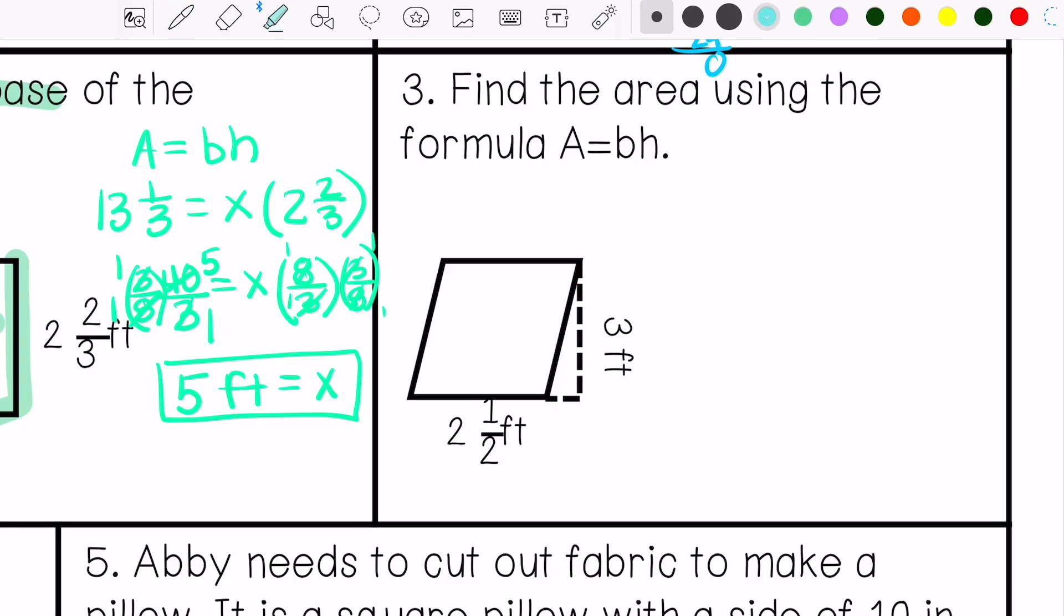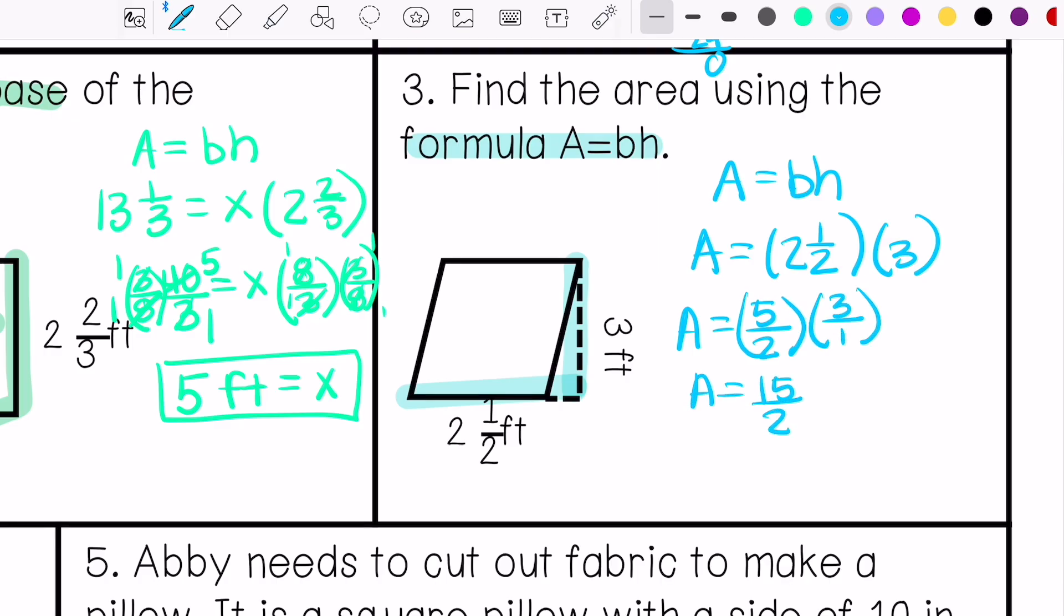Alright, this says find the area using the area formula. Area equals base times height. Don't know my area. My base is 2 1/2. My height is 3. The answer is 7 1/2 feet squared.